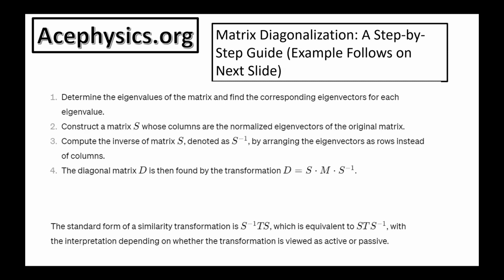Here's a step-by-step guide to diagonalization. Step 1: Determine the eigenvalues of the matrix. Step 2: Construct a matrix S whose columns are the normalized eigenvectors of the original matrix. Step 3: Compute the inverse of matrix S — denoted S inverse — by arranging the eigenvectors as rows instead of columns. Step 4: The diagonal matrix D is then found by the transformation D equals SMS inverse. Note that the similarity transformation is sometimes written with S inverse at the beginning and sometimes at the end — they both mean the same thing.